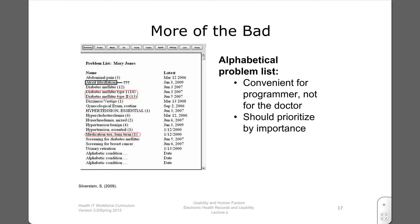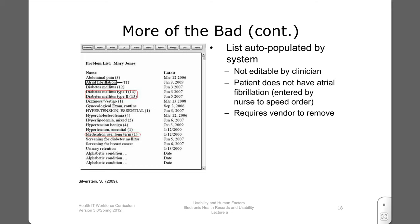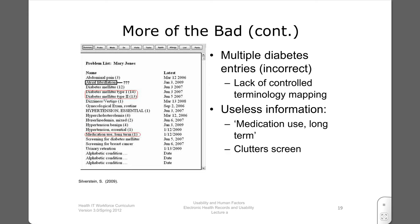This slide shows an alphabetized problem list from a real system. It does not meet the needs of clinicians, who would want to see the problems in order of severity or importance. The list is created by the system automatically, and the clinician does not have the ability to edit or delete entries. The entries can be incorrect because many people put information into the system and may make selections for convenience, such as the nurse who entered the atrial fibrillation diagnosis to speed up the order fulfillment. Unbelievably, the wrong entry can only be removed by the vendor. Thus the multiple diabetes diagnoses, only one of which is accurate.